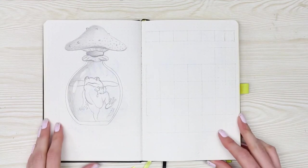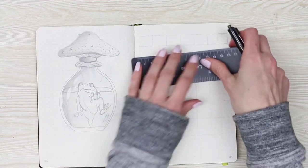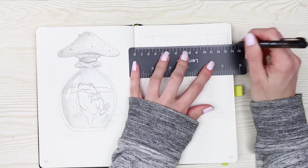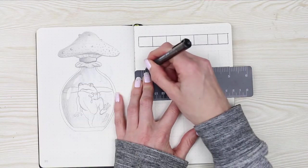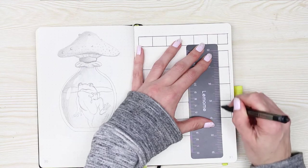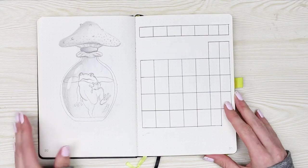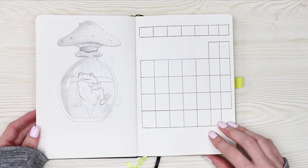Once I had finished doing my little sketch, I then moved on to my monthly calendar. For that, I'm just drawing out a simple grid which I'm keeping on one page. When I normally do my monthly calendars, I have it on a double page, but I decided to keep it on a single page.